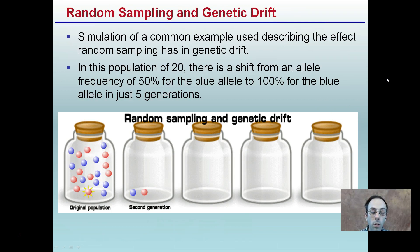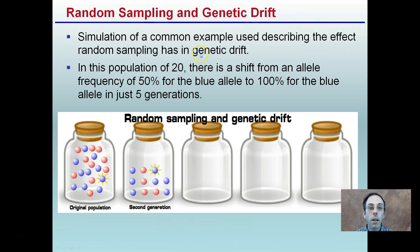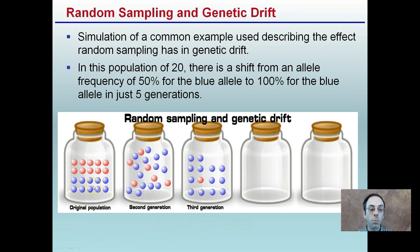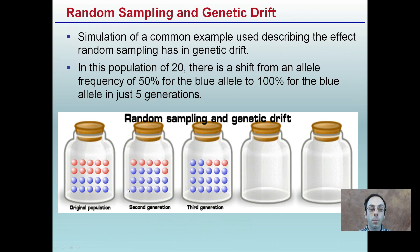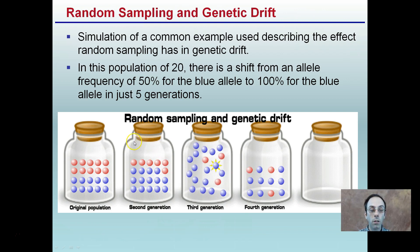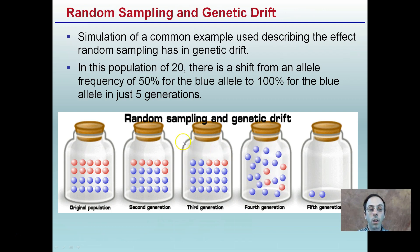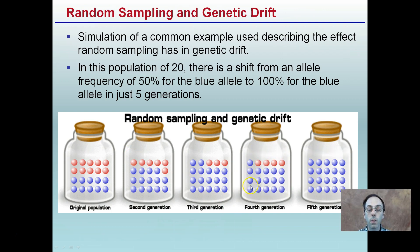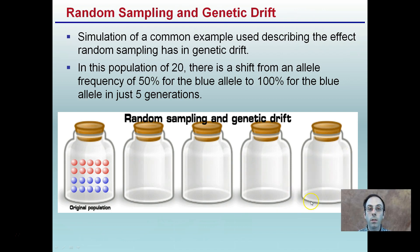This animation shows random sampling of genetic drift occurring over five generations. It's a simulation of a common example used to describe the effect of random sampling as genetic drift. In this population of 20, there's a shift from an allele frequency of 50% blue to 100% blue in just five generations. In the second generation we see an increase in blue alleles, and after three generations there's an even greater reduction in the other allele. By the fifth generation, only the blue alleles are selected and carry on.